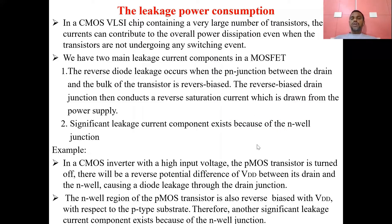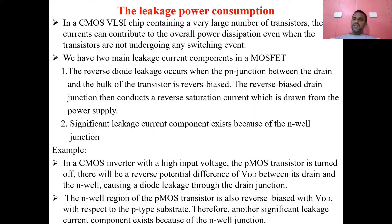Because of the junctions between source/drain and the substrate, and also source/drain and the N-well, leakage current is caused. Whenever the junctions between drain and substrate — or source and N-well — are in reverse bias, reverse saturation current flows, causing leakage power consumption. These are the important leakage currents we have in a MOS device.